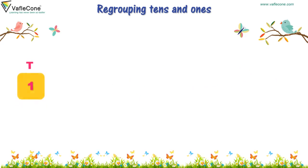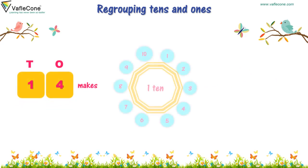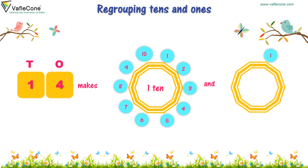One, four — fourteen makes one ten and one, two, three, four. Four, one.